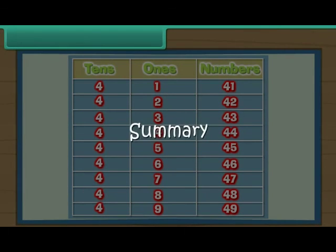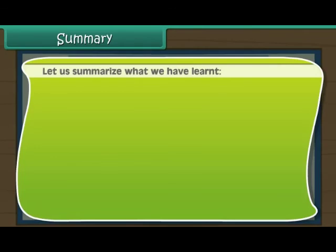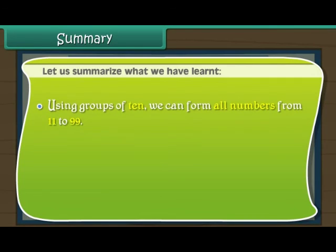Summary. Let us summarize what we have learned. Using groups of ten, we can form all numbers from 11 to 99. An abacus is used to count and form numbers.